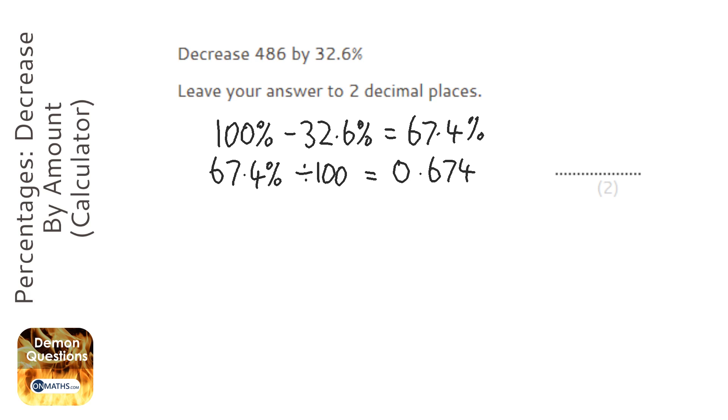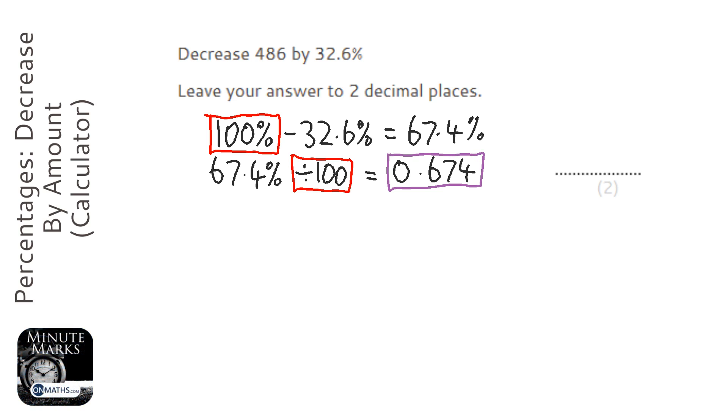Now when we're using the multiplier method, this bit here is always the same, and this bit here is always the same. And so we get our multiplier here, and the beauty of this number is anytime you times anything by 0.674, it will automatically decrease it by 32.6%.